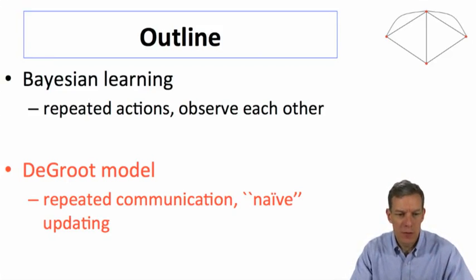But we can look now at the DeGroot model, which is a model of repeated communication and a more naive updating. So it has advantages and disadvantages. In terms of advantages, the model is going to be quite simple and mathematically elegant, and it'll bring network structure in a very easy way, and will be very powerful in terms of how we can work with it and what kinds of things we can deduce.